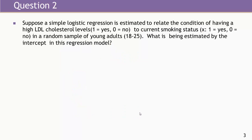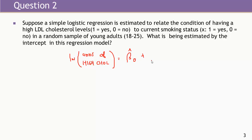Suppose a simple logistic regression is estimated to relate the condition of having high LDL cholesterol levels to current smoking status in a random sample of young adults. The model looks like this: the log odds of high cholesterol level equals some intercept estimate plus some estimated slope times x, where x is 1 for smokers and 0 for non-smokers. What is being estimated by the intercept here?